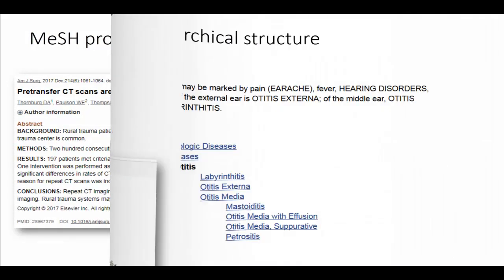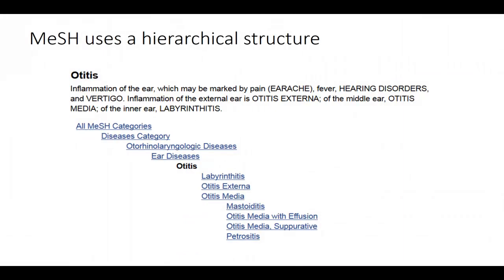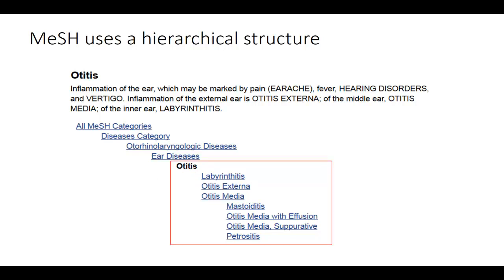MeSH uses a hierarchical structure that permits searching at various levels of specificity. For instance, the MeSH term otitis falls under ear diseases, and there are more specific cases of otitis inflammation listed underneath. When I search the term otitis, I'm not only searching articles tagged with this subject heading — I'm also searching articles tagged with the more specific subject headings.